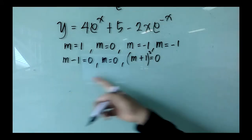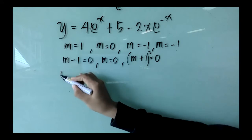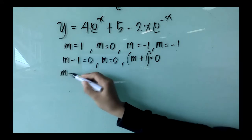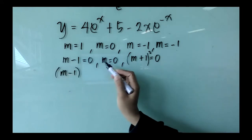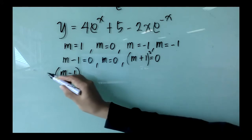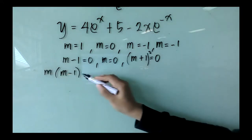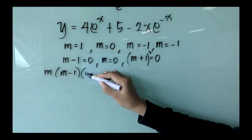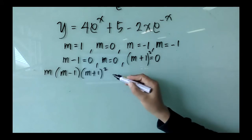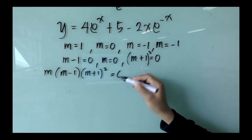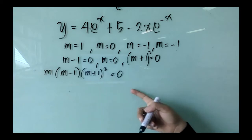Multiplying all the factors together, we have (m - 1) times m times (m + 1) squared equal to 0. This is the auxiliary equation.